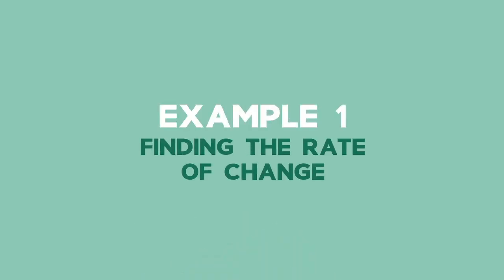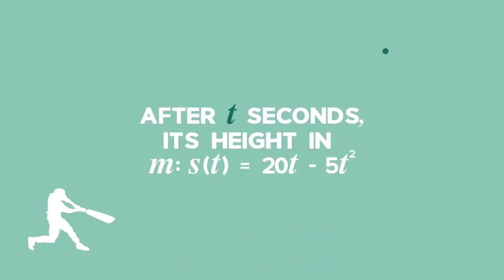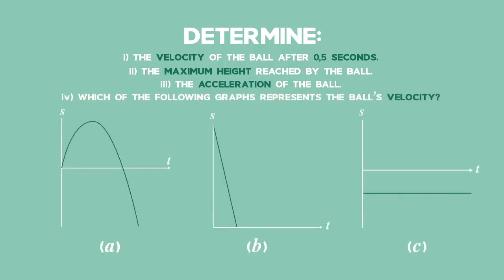Example 1. A cricket ball is hit vertically up in the air. After t seconds, its height in meters is given by s of t equals 20t minus 5 times t squared. Determine: 1) The velocity of the ball after 0.5 seconds, 2) The maximum height reached by the ball, 3) The acceleration of the ball, 4) Which of the following graphs represents the cricket ball's velocity?